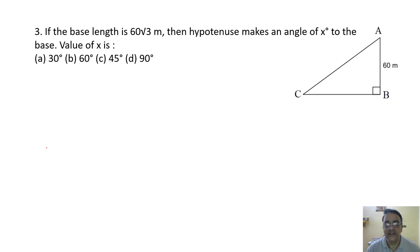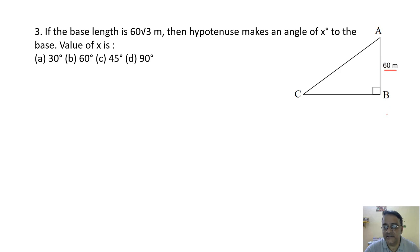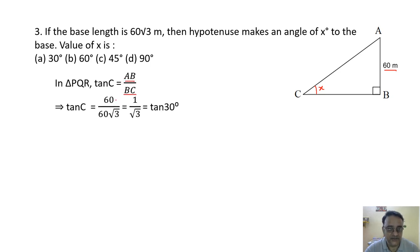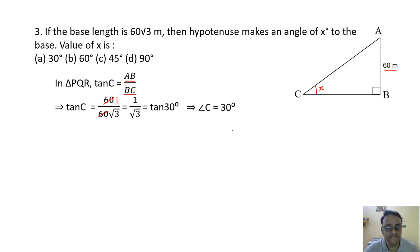Question 3: If the base length is 60√3 meter, the hypotenuse makes angle x to the base. Using tan C = AB/BC = 60/60√3 = 1/√3. Since tan 30° = 1/√3, angle C = 30 degrees. The correct option is option A.